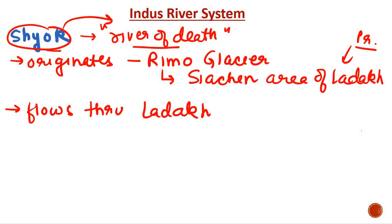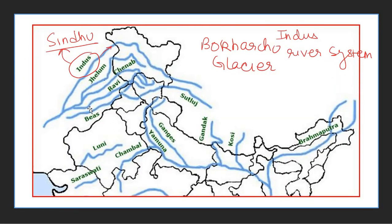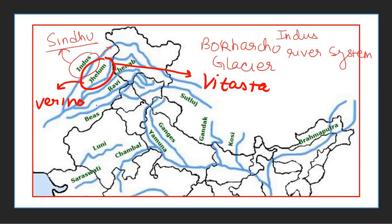The next important river is Jhelum. Its ancient name is Vitasta — very important for prelims. It originates from the Verinag spring in Kashmir. Jhelum is a tributary of the Chenab river and flows only in Jammu and Kashmir. It also cuts through the gorge in the Pirpanjal range.